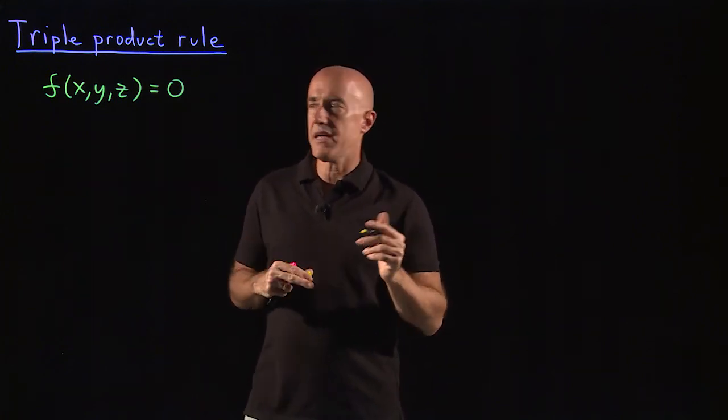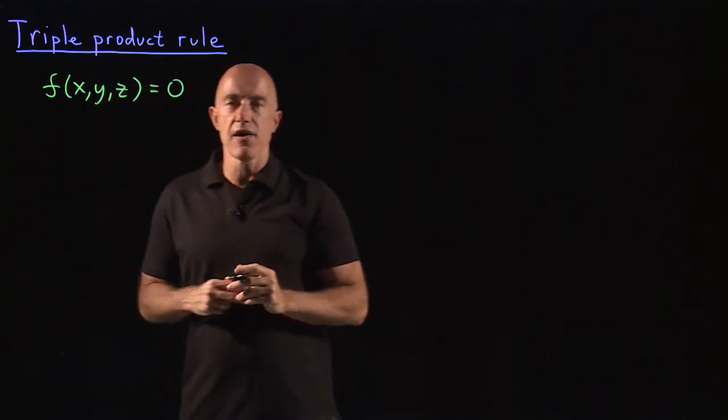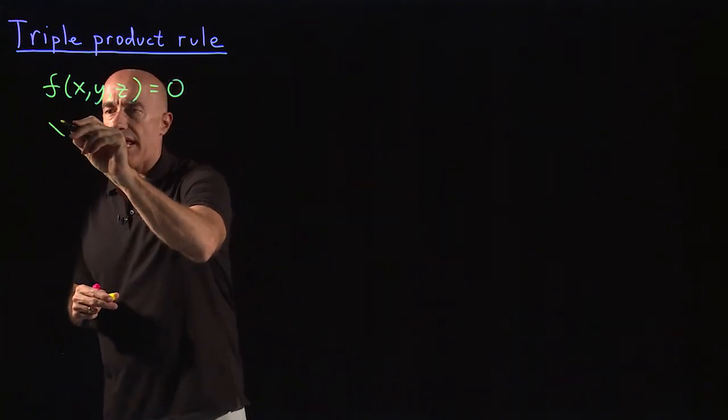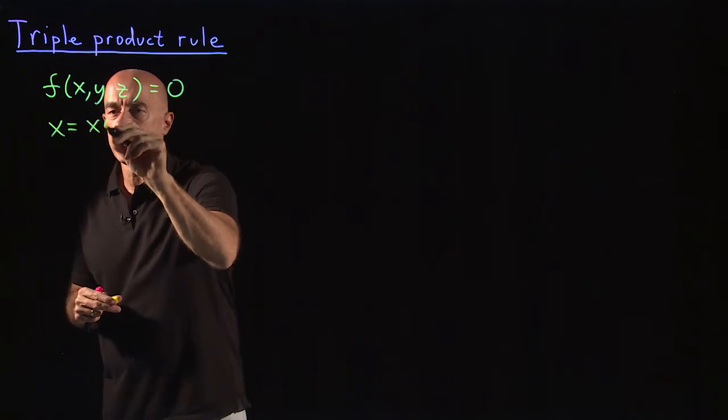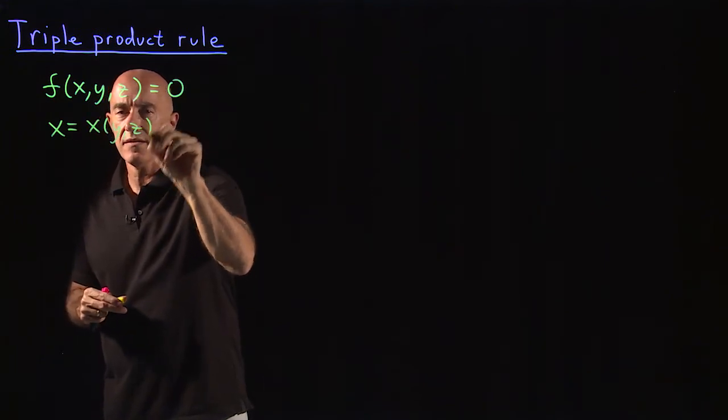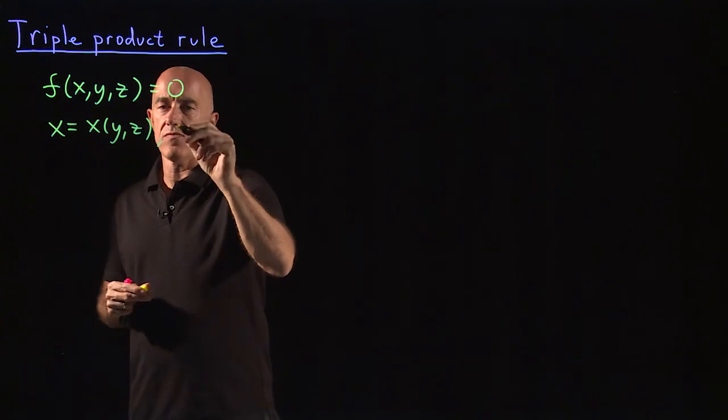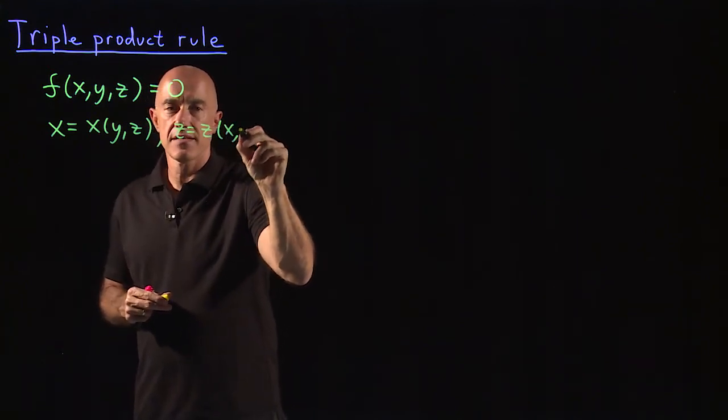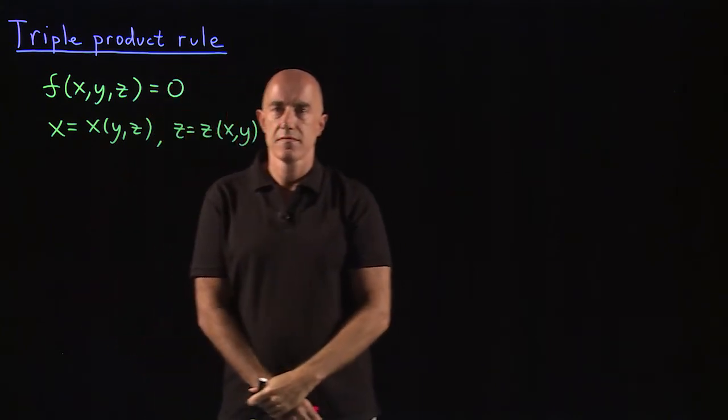Since they're related, you want to be able to solve for x, or solve for y, or solve for z. So for instance, you can write x, which is a function of y and z. Or you can write z as a function of x and y.